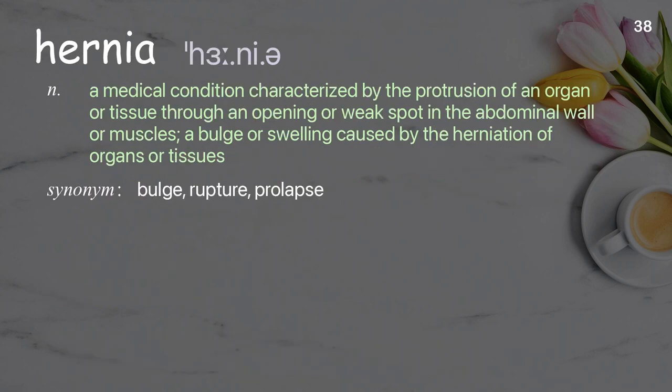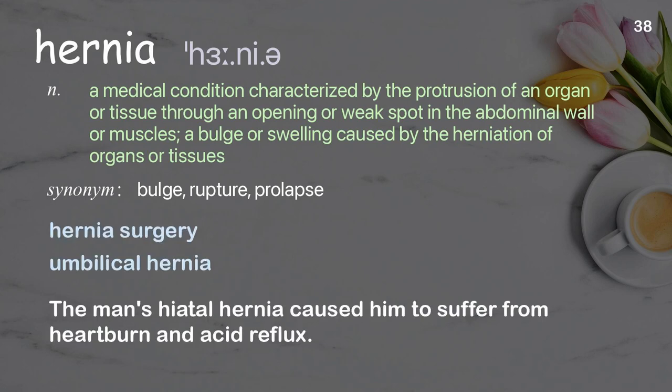Hernia. A medical condition characterized by the protrusion of an organ or tissue through an opening or weak spot in the abdominal wall or muscles; a bulge or swelling caused by the herniation of organs or tissues. Examples: hernia surgery, umbilical hernia. The man's hiatal hernia caused him to suffer from heartburn and acid reflux.